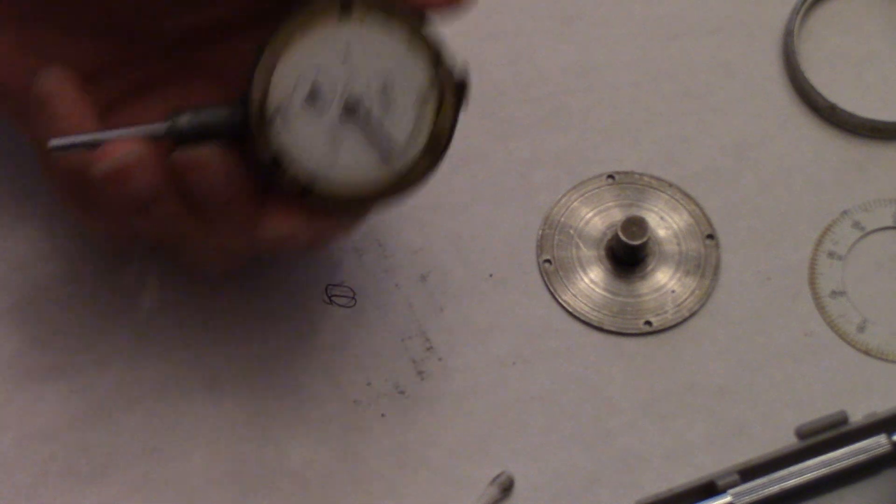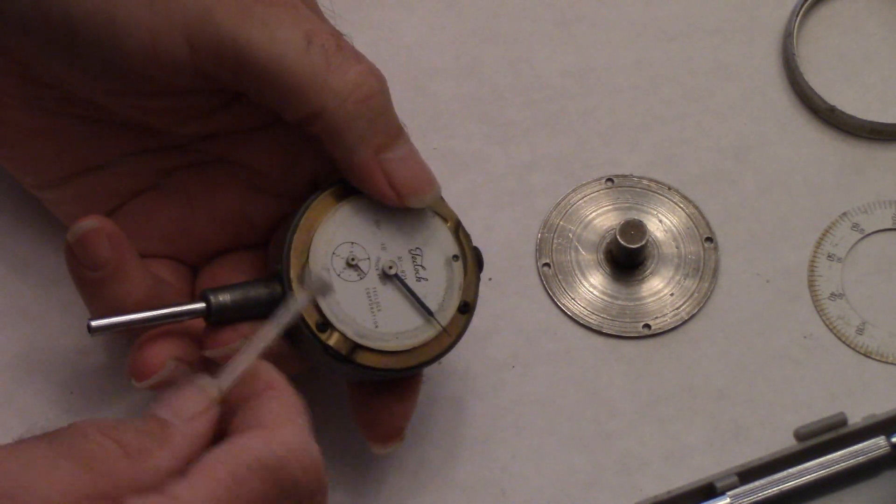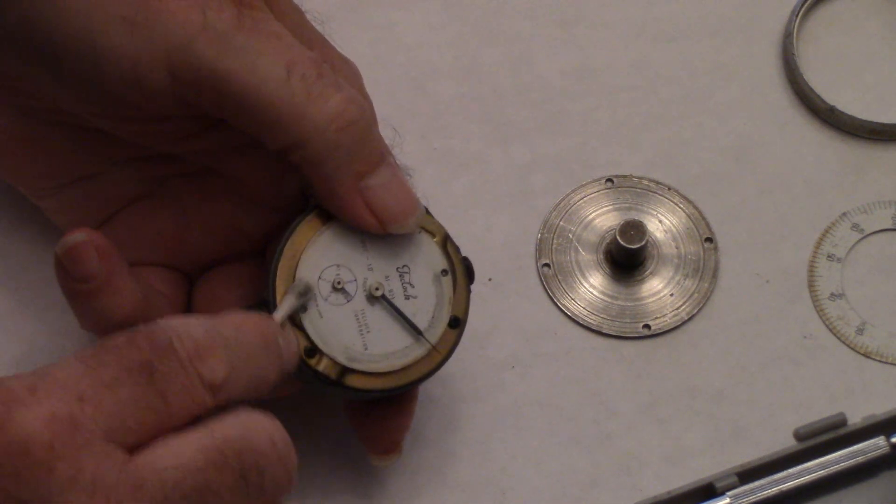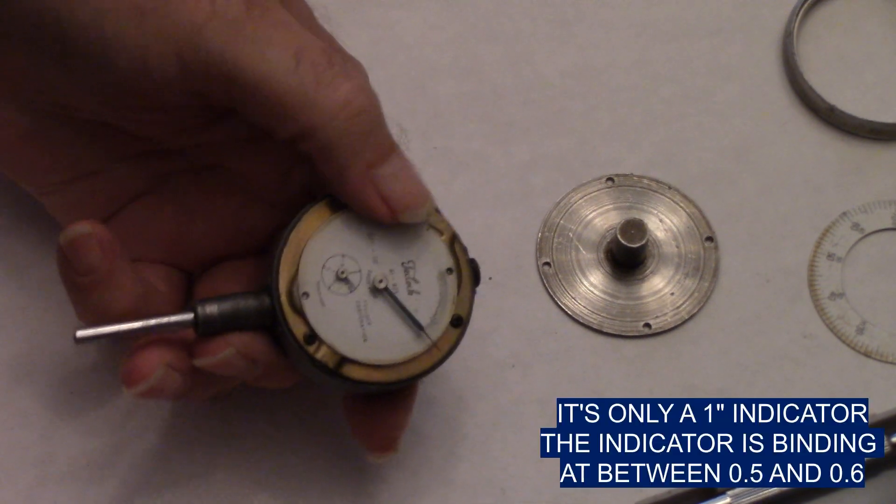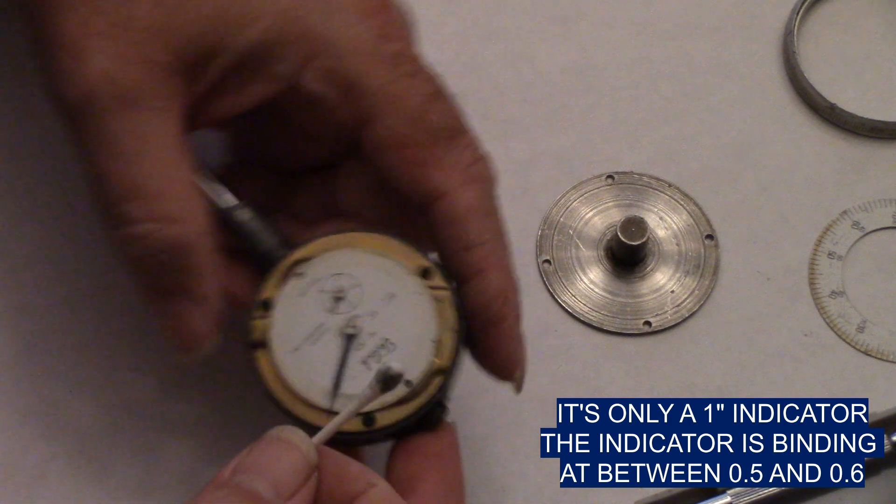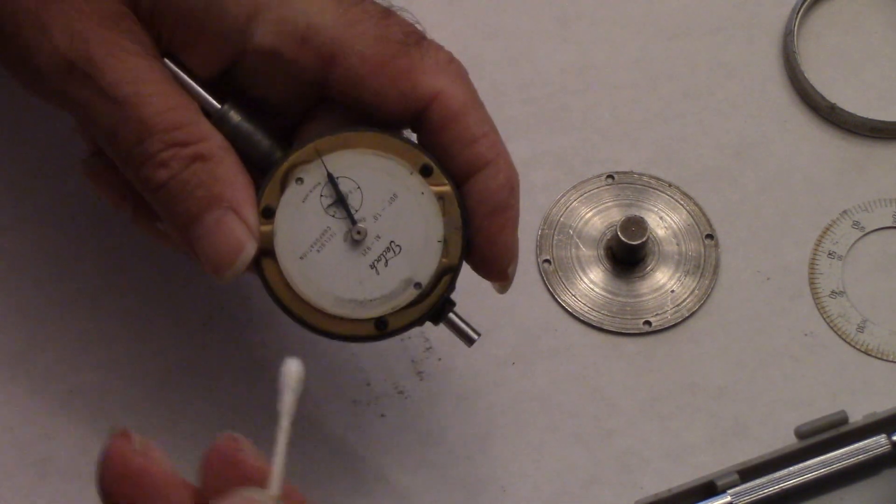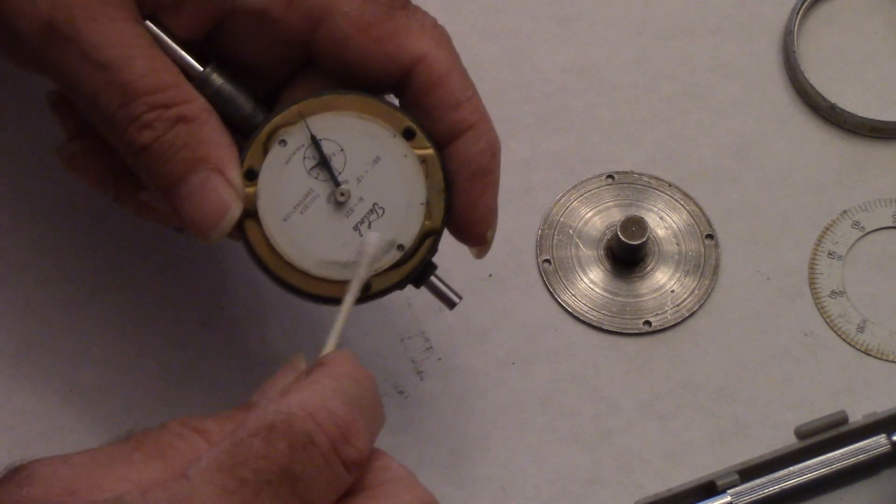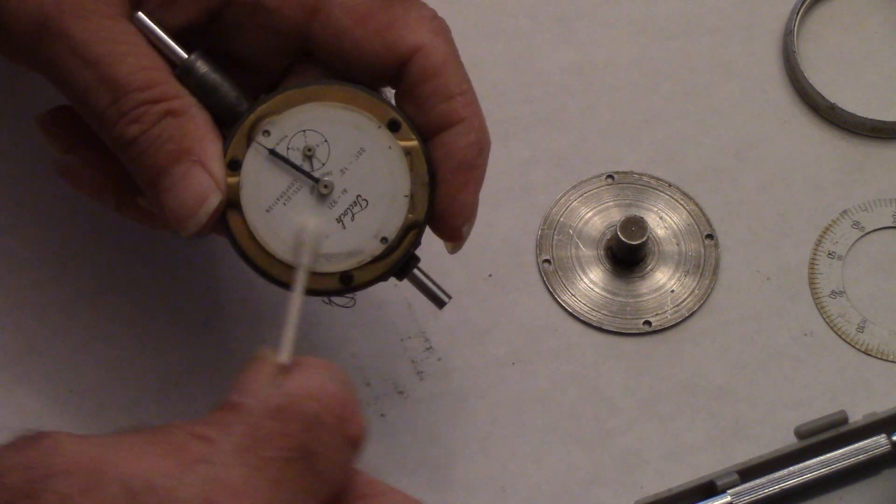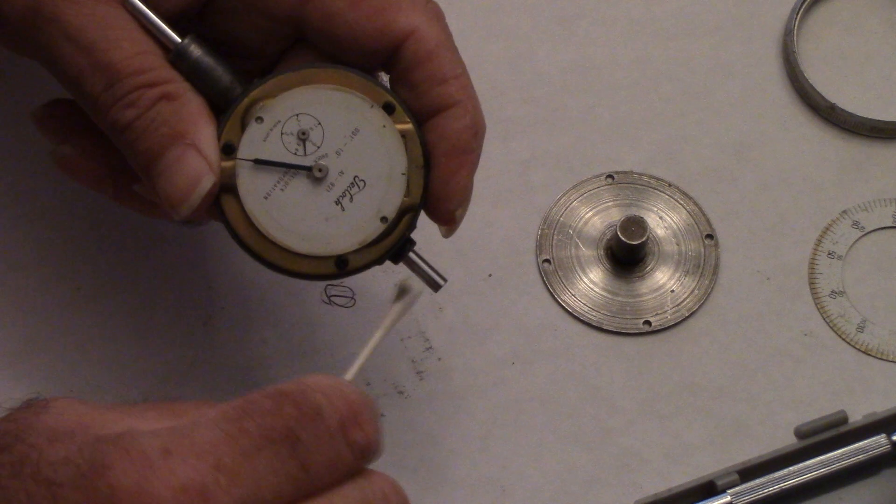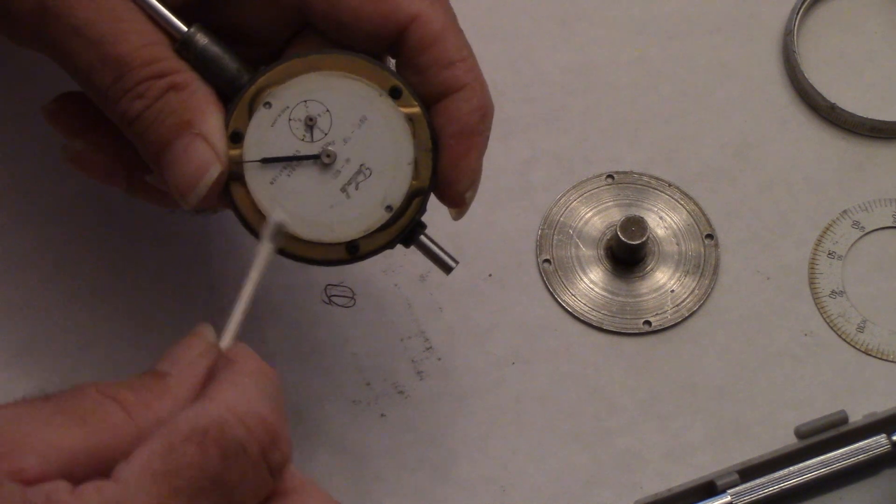Bob takes these things down so far that he takes the needles off of them and everything else. This one has got a little hiccup at 650 thousandths—there's a burr on the stem that I have hit with my Forsure Precision stones that I got from Steve up at Shark River Machine.